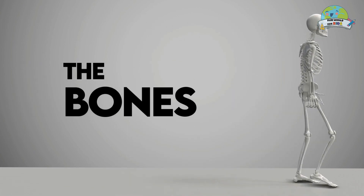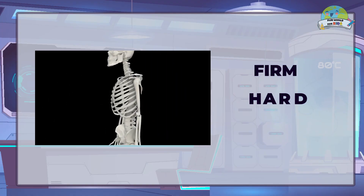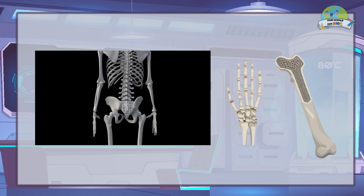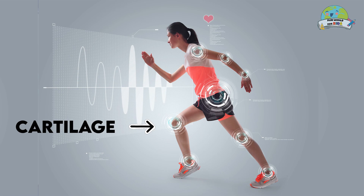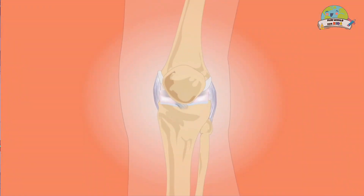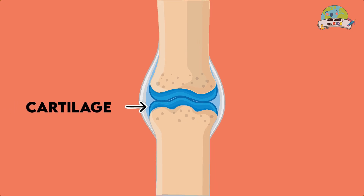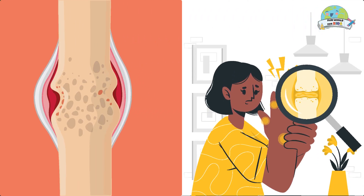The bones are firm, hard and resistant organs. They are composed of hard and soft tissues. Cartilage is found at the ends of the bones, protecting them. They function as pads and prevent those bones from colliding with each other, thus preventing their wear.